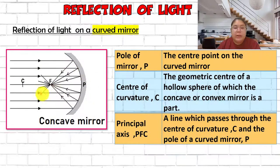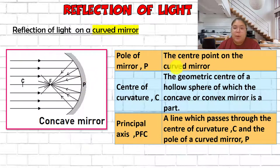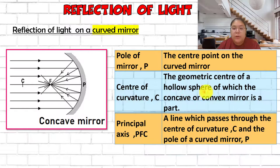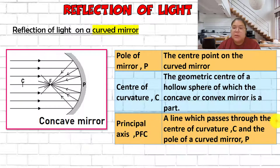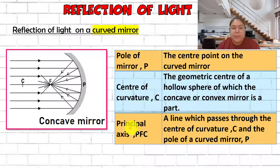Now we need to learn the labels for the mirror. First is the pole of the mirror - P - which is the center point of the curved mirror. Then C is the center of curvature - the geometric center of the whole sphere of which the concave or convex mirror is a part. The straight line passing through P, F, and C is called the principal axis.